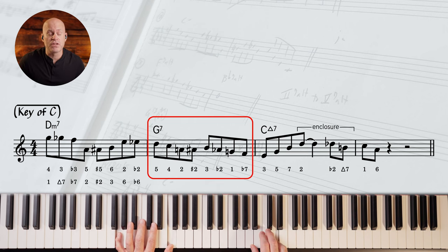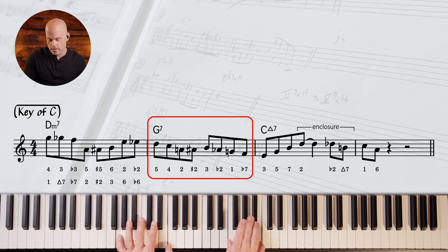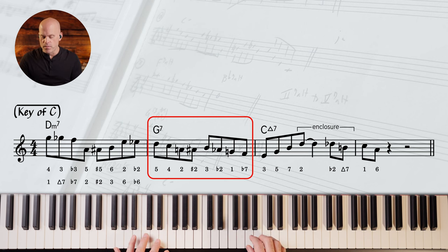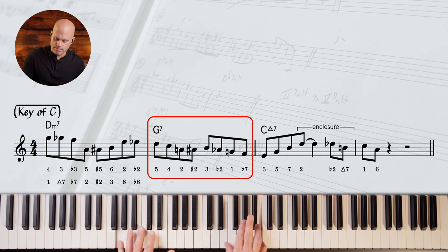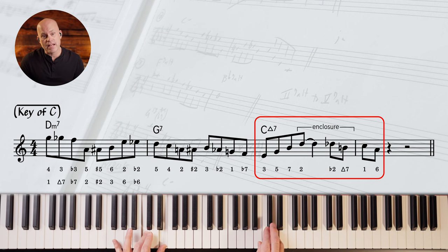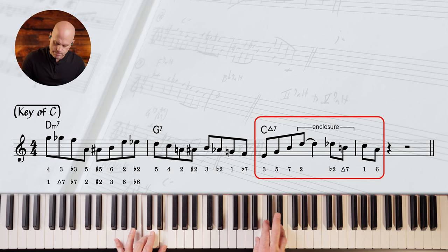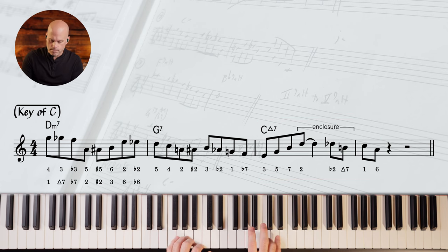And then we've got a resolution to the third of G7. Very common movement. 3 flat 9 root flat 7. And then this little 3-5-7-9 with an enclosure to the 6. 3-5-6.